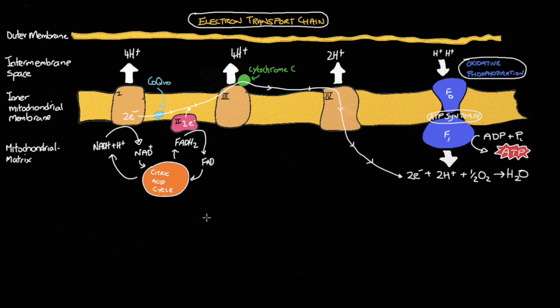Now, within the matrix of the mitochondrion we have the citric acid cycle. The main objective of the citric acid cycle is to generate reduced coenzymes that carry high energy electrons to the inner mitochondrial membrane. One of the most important electron carriers is NADH. This is the reduced version of NAD+. NADH carries its high energy electrons from the citric acid cycle and offloads them at this first complex.